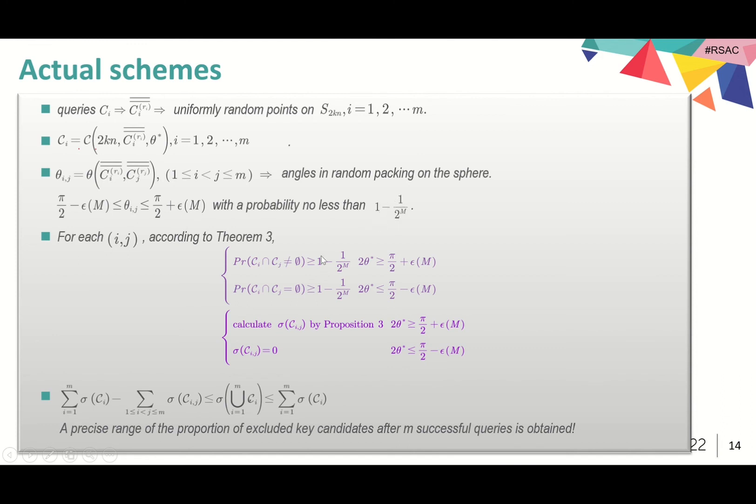As we know, the disjointness of c_i and c_j is related to the relationship between 2 theta star and theta_{ij}. And the range of theta_{ij} is given by this inequality. So, we get these formulas to characterize the intersection of c_i and c_j.